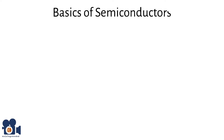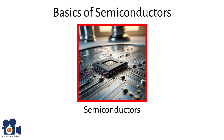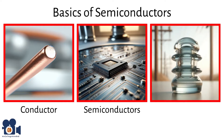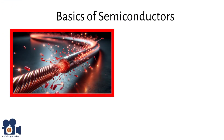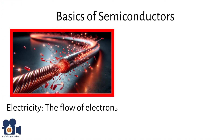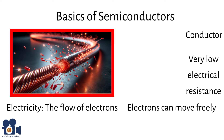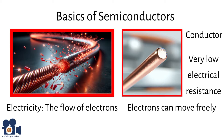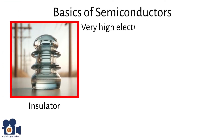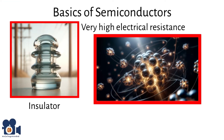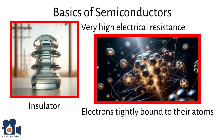Semiconductors are materials that have electrical conductivity between that of conductors like metals and insulators like glass. Electricity is the flow of electrons, and conductors have very low electrical resistance, meaning electrons can move freely within materials such as copper and aluminum. Insulators have very high electrical resistance where electrons are tightly bound to their atoms and cannot move freely, such as in glass and rubber.